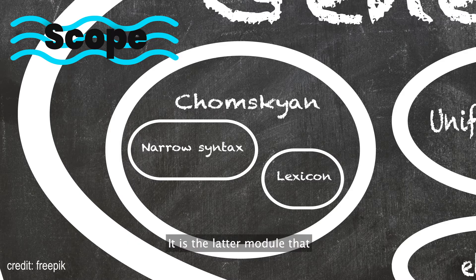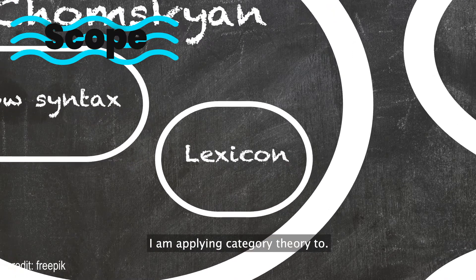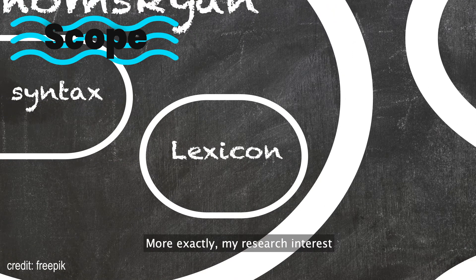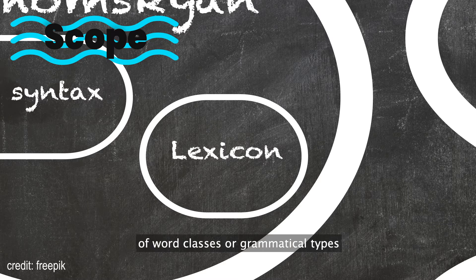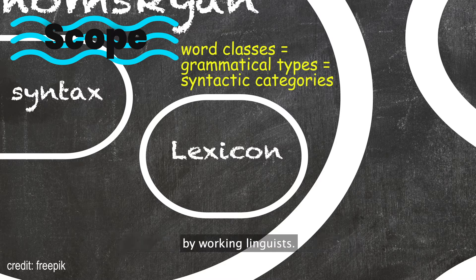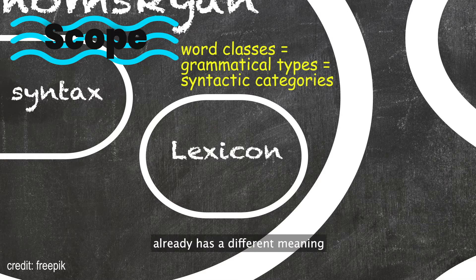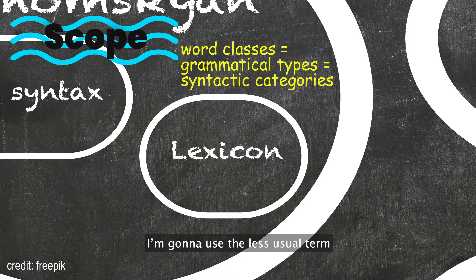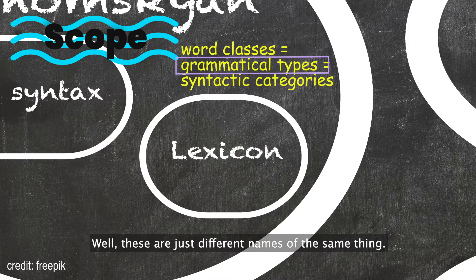It is the latter module — the lexicon — that I am applying category theory to. More exactly, my research interest lies in the structure and organization of word classes or grammatical types within the mental lexicon of human beings. These classes or types are more standardly called syntactic categories by working linguists, but since the term category already has a different meaning in the context of this conference, I'm going to use the less usual term grammatical type instead. These are just different names of the same thing.